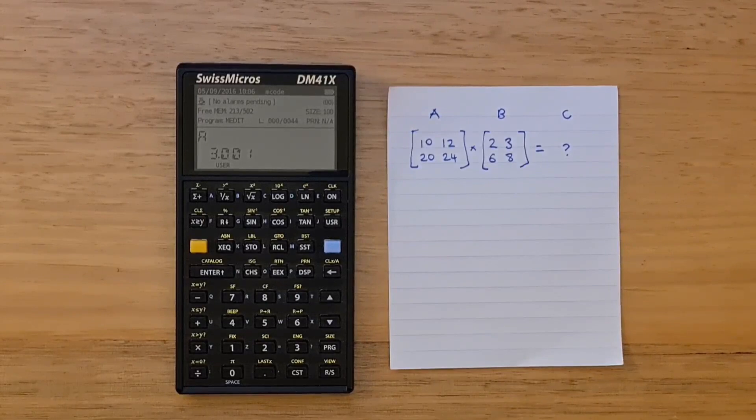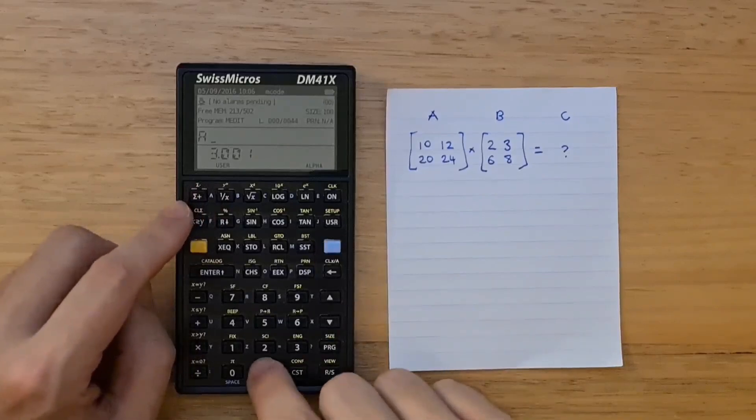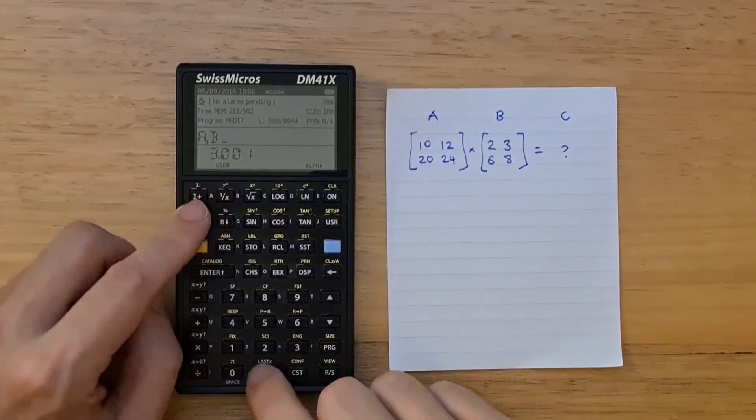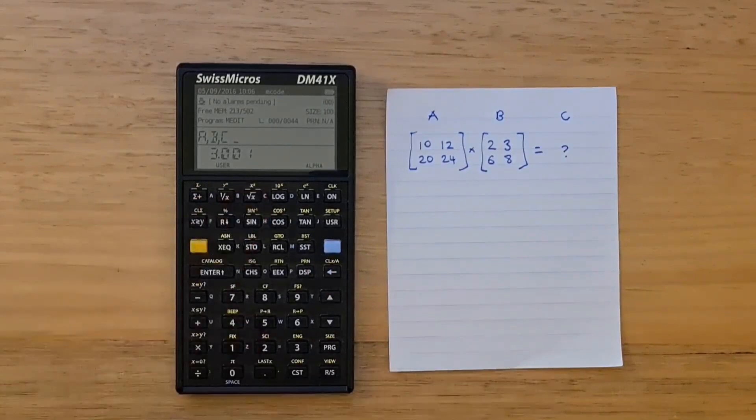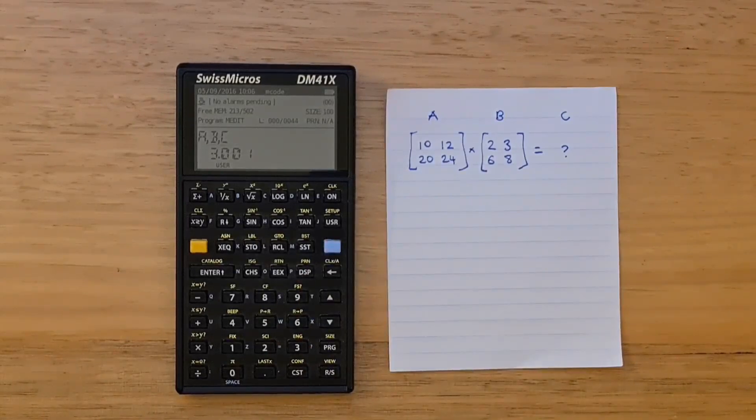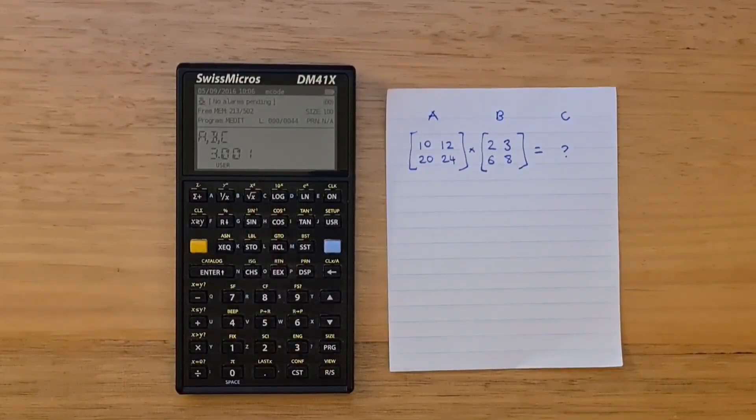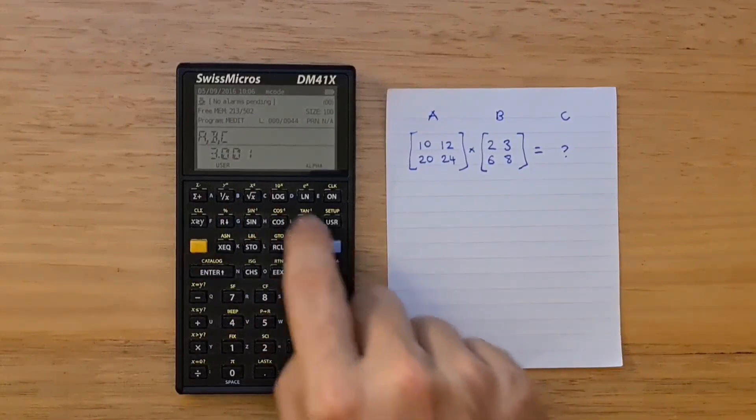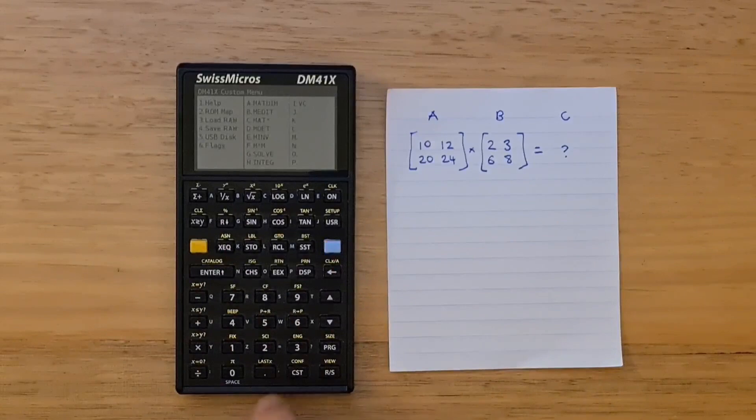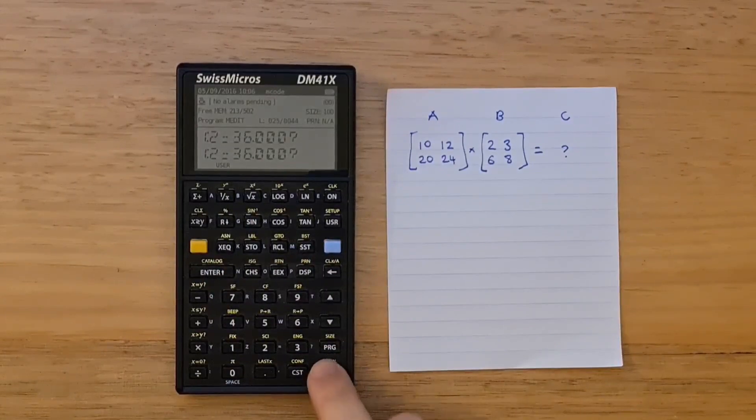Now to use the matrix multiply command, we need to enter the names of the operands for the operation and where to put the result in the alpha register. I'll enter A comma B comma C. This indicates that we want the result to go in matrix C. Now I can run matrix multiply. If I want to see my results, I can use the mEdit command again. The result is 20, 36, 120 and 192.